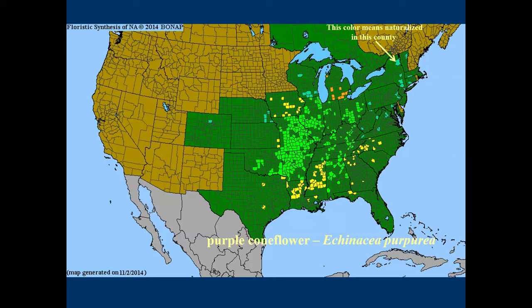Purple coneflower is not native to New York — it's naturalized. We often use it as an example of a great native plant, but it's naturalized. When you see that blue-green color on the BoNAP map, that means it's naturalized.